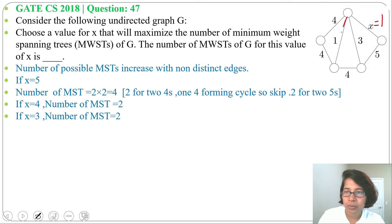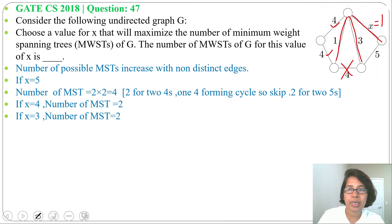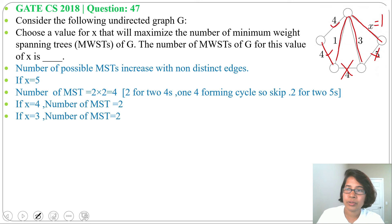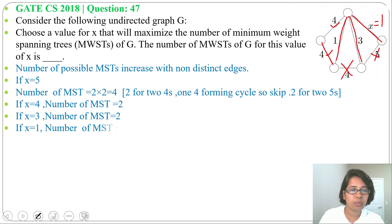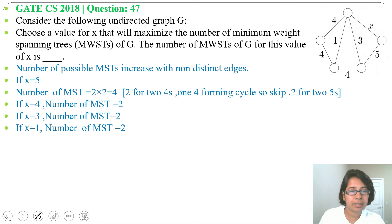If x equals 1, there are also 2 minimum spanning trees possible. We choose this 1, then 1, then 3; the 4 creating a cycle is skipped. From the two edges of weight 4 we can choose any one, giving 2 minimum spanning trees when x equals 1.